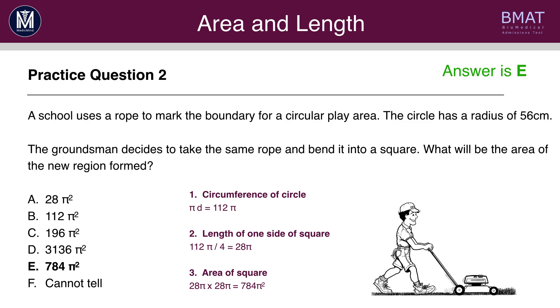Now, we need to work out the area of the new square formed. And to do this, we need to know the length of one side of the square. Well, the length of one side of the square would be equal to the circumference of the circle divided by 4. This is because the perimeter of the square is equal to the perimeter or circumference of the circle. So, we do 112π ÷ 4, which gives you 28π.